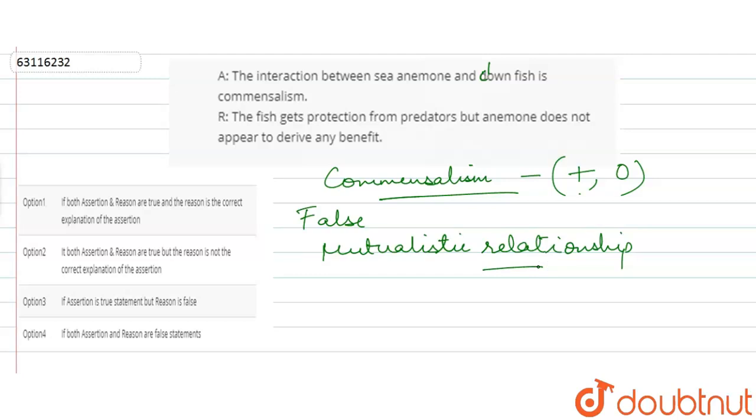And then, what does the clownfish do? It protects the sea anemone from predators and helps them to move and provide food. So what do both do? They stay in a mutualistic relationship.